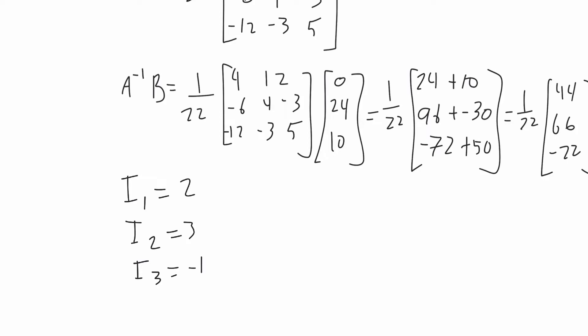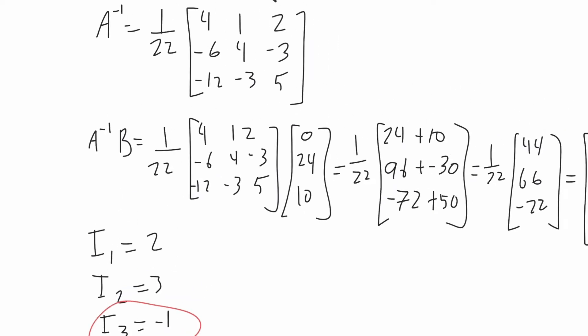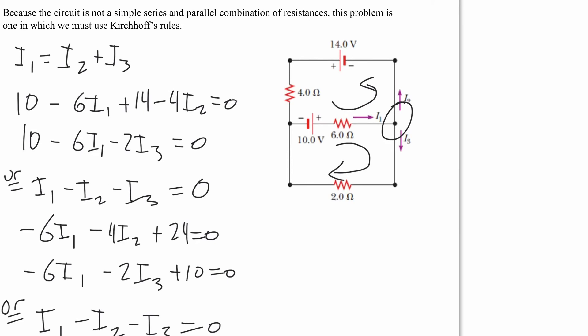We've solved the system. Notably, I3 is negative, which means our assumed clockwise direction for that current was wrong. In Kirchhoff's rules, this sometimes happens — I3 is actually flowing upward in a counterclockwise direction. The negative sign tells us we had the direction reversed.